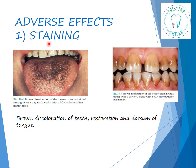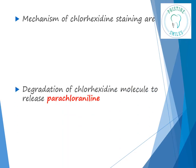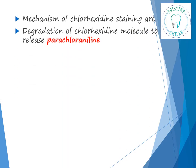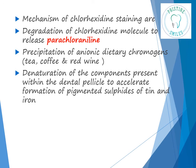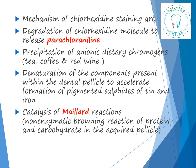One of the most common side effects associated with chlorhexidine is staining. If you notice here, there is brown discoloration of the tongue, teeth, and restorations. The mechanisms of chlorhexidine staining include: degradation of the chlorhexidine molecule to release parachloroaniline; precipitation of anionic dietary chromogens present in tea, coffee, and red wine; denaturation of components within the dental pellicle to increase the formation of pigmented sulfides of tin and iron; and catalysis of Maillard reactions — that is, the non-enzymatic browning reaction of proteins and carbohydrates in the acquired pellicle.